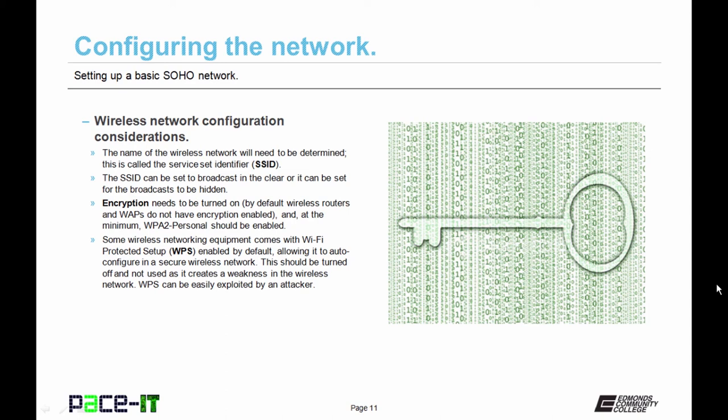Encryption needs to be turned on. By default, wireless routers and access points do not have encryption enabled. That makes them easier to set up, but unsecure. At the minimum, WPA2 Personal should be enabled.